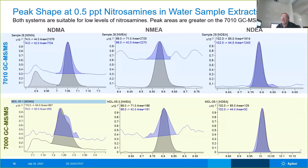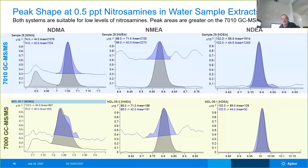The 7010 shows better performance than the 7000, but the 7000 still shows better performance than the Varian ion trap, which has been traditionally used. You can see that we've overlaid the qualifier ion and the quantifier ion. For NDMA at 0.5 PPT nitrosamines in the extract, we have very good, easily measurable peaks — well better than 2.5 times signal-to-noise for each of the compounds listed. Even at the 7000, you still have better than 2.5 times the noise. Both systems can perform the analysis, but there's a clear benefit to the 7010 system. They both use the same data system processing, so familiarity between the two is very good.